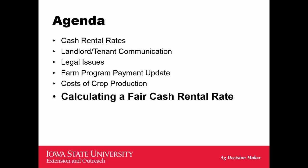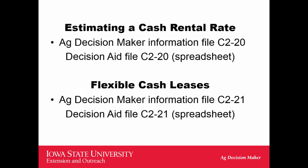We want to talk about some of the ways that can be done. We've got a couple of publications on that. The first one is on our Ag Decision Maker website. If you simply Google Ag Decision Maker, it should pop up as your first result, and then in the upper right-hand corner in the search box you can put in C2-20.